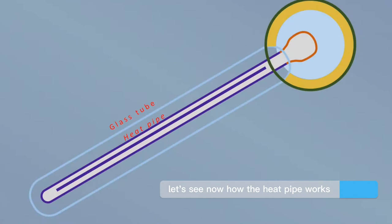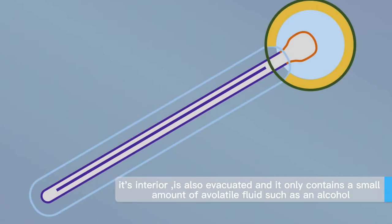Let's see now how the heat pipe works. Its interior is also evacuated and it only contains a small amount of volatile fluid such as an alcohol.